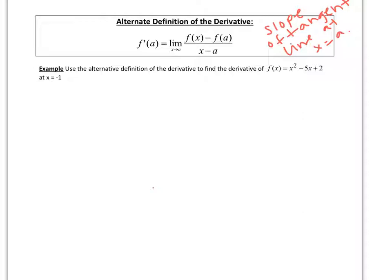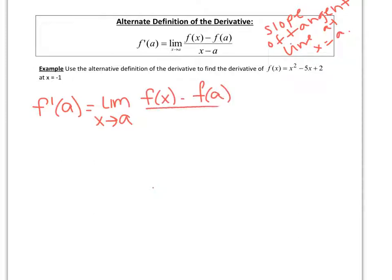So we have: f prime of a equals the limit as x approaches a of f of x minus f of a, over x minus a.